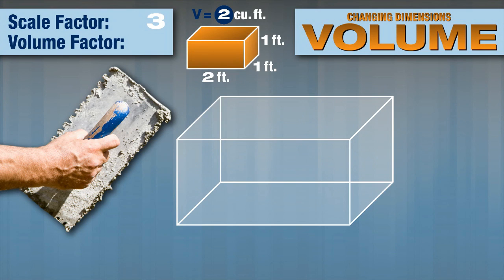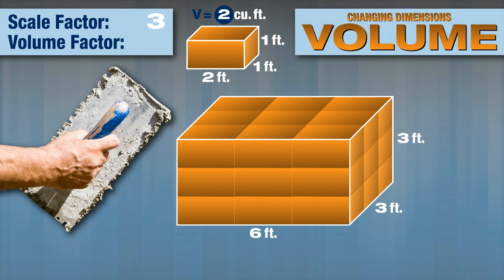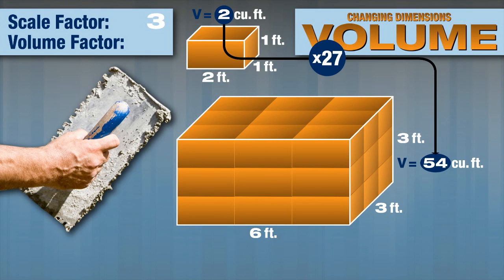Well, the dimensions become 6 feet by 3 feet by 3 feet. The volume of the new prism is 54 cubic feet. That's 27 times the original volume, so the volume factor is 27.